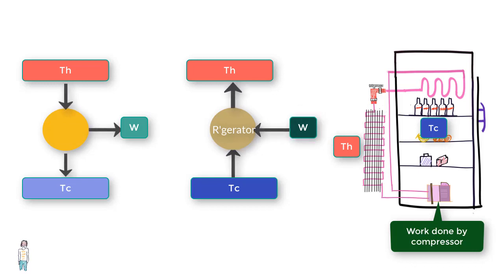You need to consider QC positive for a refrigerator and QH and W would be negative. Now, for a cyclical process, QH plus QC is equal to W.